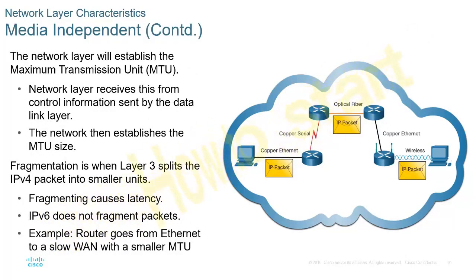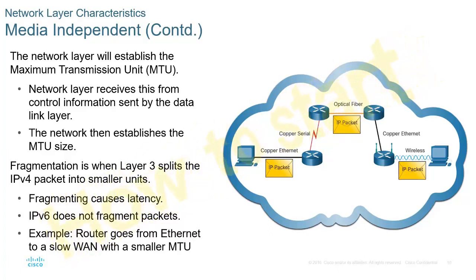Another part of media independence is that layer 2 will actually have a maximum transmission unit, MTU. The frame knows what size it should be, and so does the packet. The packet may chunk itself up before it goes down to layer 2, allowing the network layer to chunk up its size as opposed to the data link layer chunking down its size. Often, the network will establish the appropriate MTU size so that all media throughout the network is using the same size. Realistically, 1500 bytes is the standard MTU size, though it can be slightly bigger or smaller.